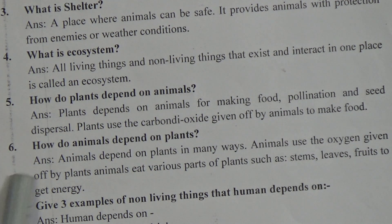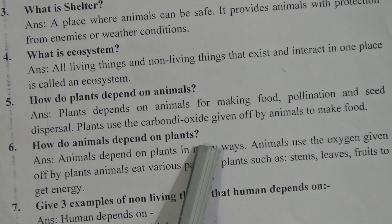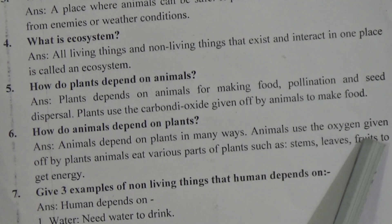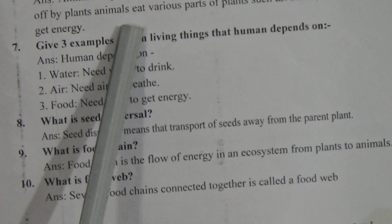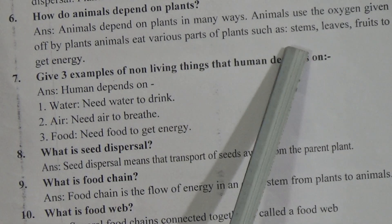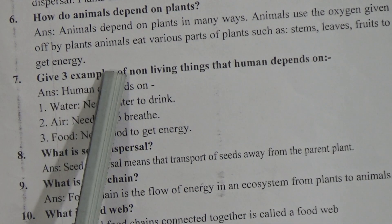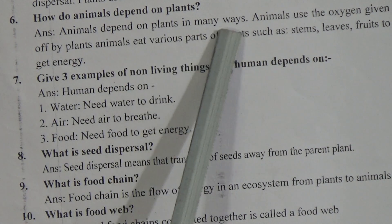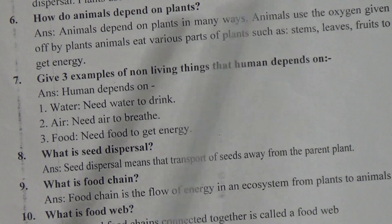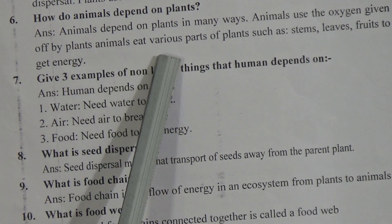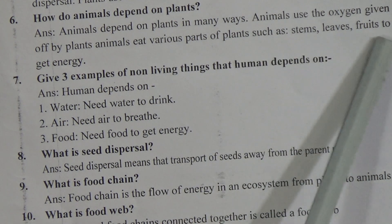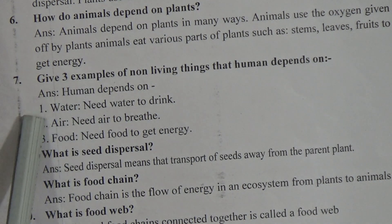Short question number 6: How do animals depend on plants? Animals depend on plants in many ways. Animals use the oxygen given off by plants. Animals eat various parts of plants such as stems, leaves, and fruits to get energy.